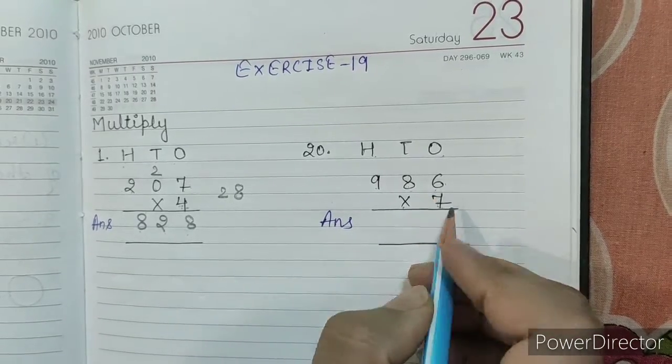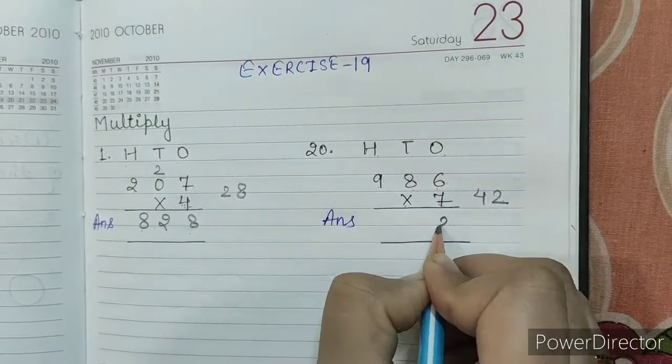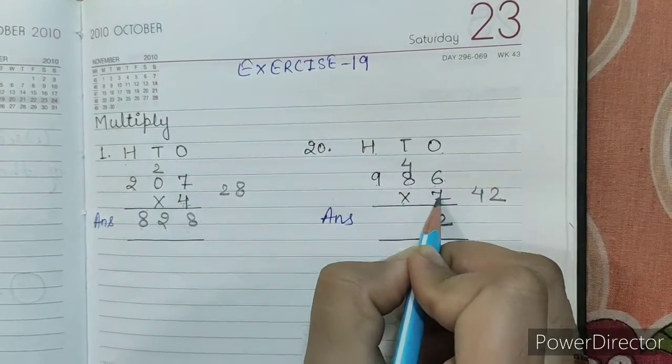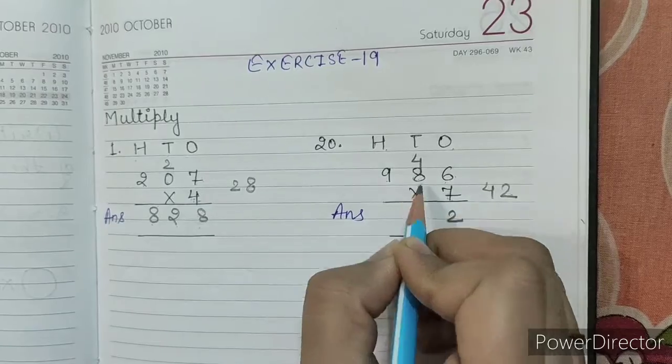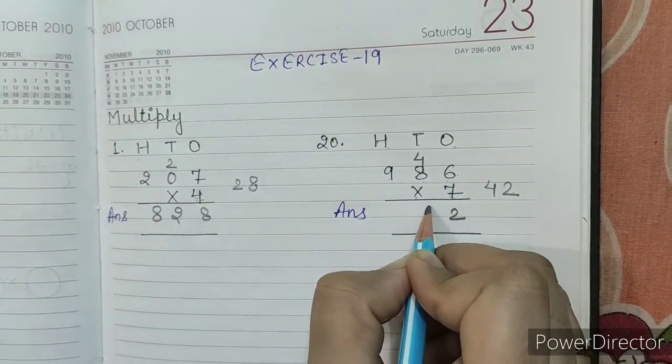So, 7, 6s are 42. 4, 2, 42. We will write 2. Carry over 4. 7, 8s are 56. 56 plus 4, 60.